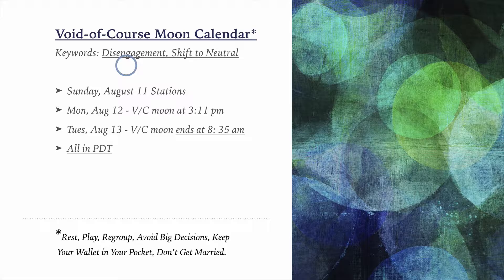So Void of Course Moon calendar for this upcoming week. Just for those people who've not listened to any of my other podcasts, what is the Void of Course Moon? The Void of Course Moon is the time period that it takes for the Moon to transition from one astrological sign to another. And this takes place every two and a half days, and sometimes it only lasts minutes. Frequently, it lasts several hours, and every now and then it'll last a whole day.